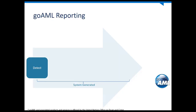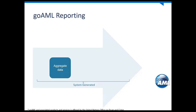Through our process, we automate detection — automatically detecting where a transaction has exceeded the threshold or something suspicious has happened. Then we aggregate the data, which is quite important because these reports require a lot of different information: the customer's IDs, date of birth, address, where the transaction took place, information around the entity filing the report, the transaction date, and so on. We do all of that aggregation to take the workload off the compliance staff.